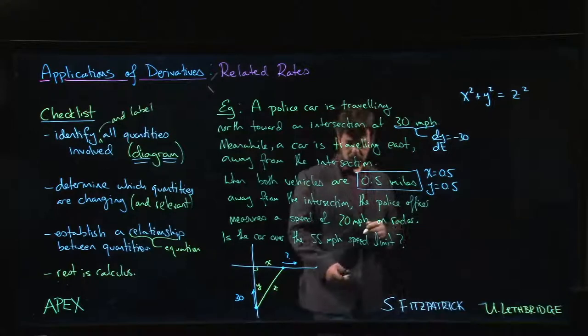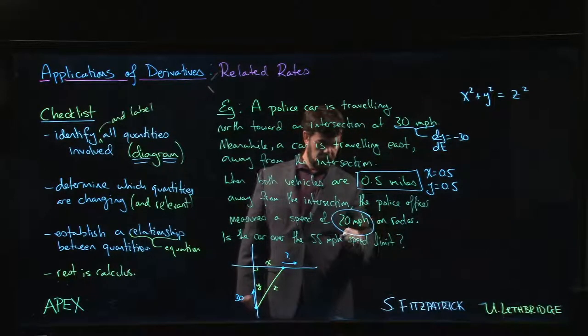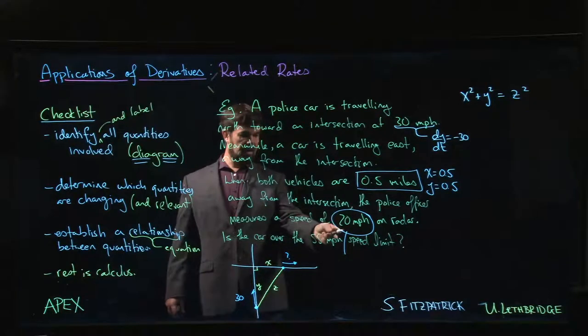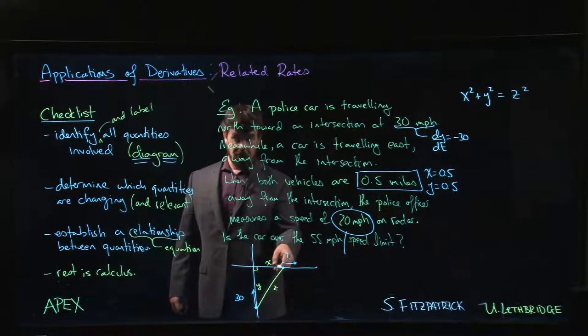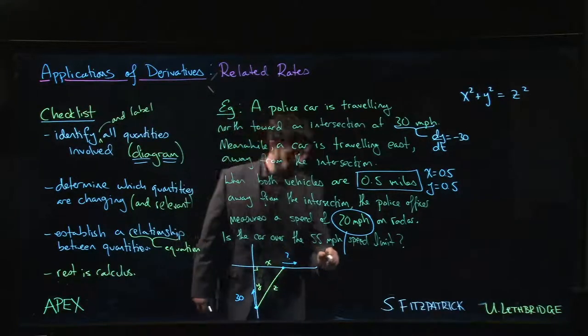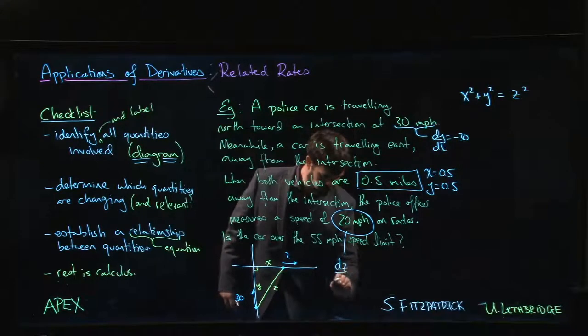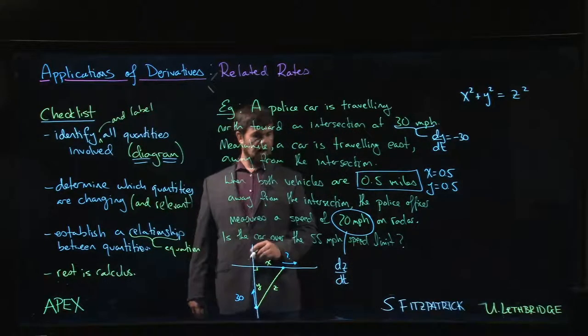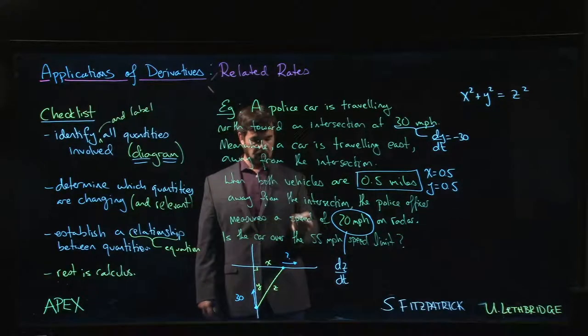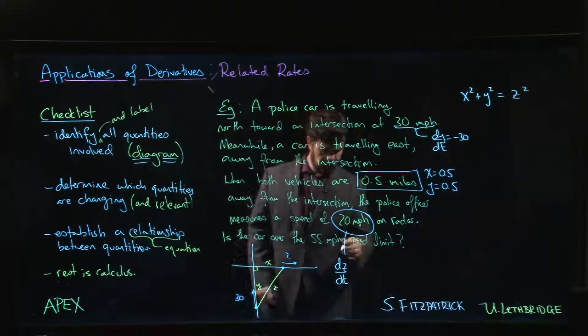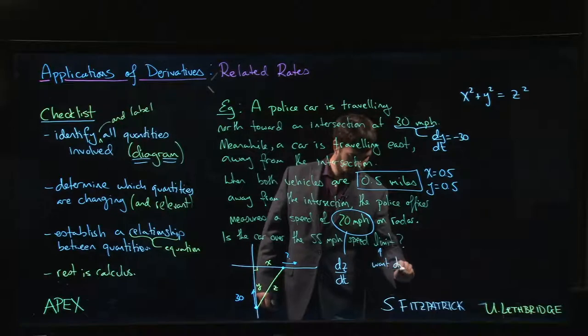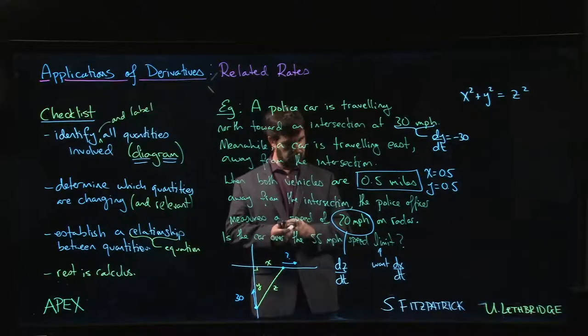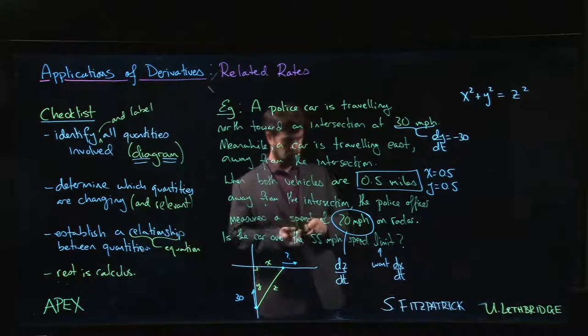This 20 here, what is 20? Well, 20 is the speed measured on the radar gun. If the police officer is here measuring the speed of the car over there, the radar gun is pointing that way, so this must be the value of dz/dt. And what are we trying to figure out? We're trying to figure out whether or not the car is over the speed limit, and so this means that what we want is dx/dt. That's what we're trying to get.